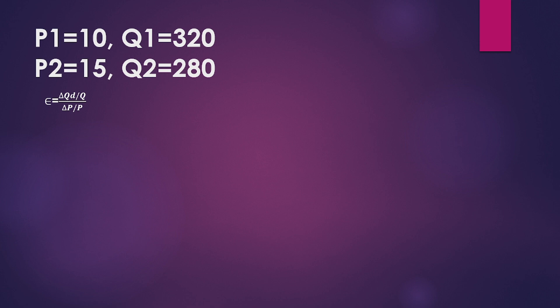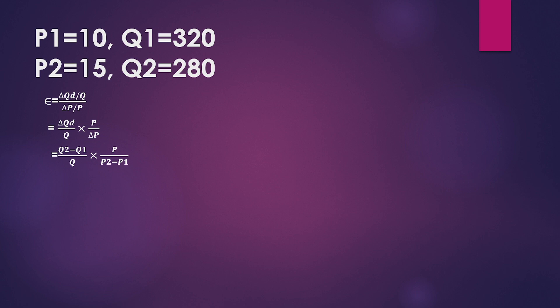The formula of price elasticity of demand equals change in quantity demanded divided by quantity, multiplied by price divided by change in price. That is: change in quantity demanded divided by Q, multiplied by P divided by change in price, where change in quantity demand equals Q2 minus Q1, divided by Q (first quantity), multiplied by P (first price), divided by P2 minus P1.